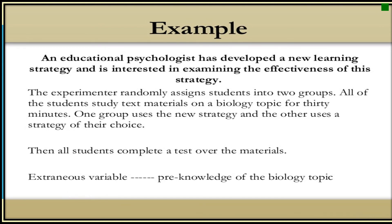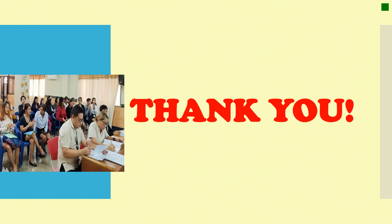For example, an educational psychologist has developed a new learning strategy and is interested in examining the effectiveness of this strategy. The experimenter randomly assigns students into two groups. All of the students study text materials on a biology topic for 30 minutes. One group uses the new strategy and the other uses a strategy of their choice. Then all students complete the test over the materials. The extraneous variable here is the pre-knowledge of the biology topic, which is the variable you are not intentionally studying. If you have questions, you can send me comments or feedback about variables.